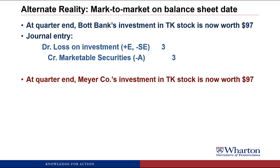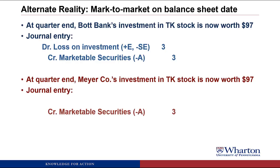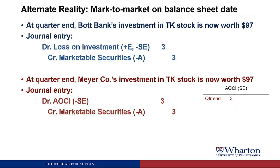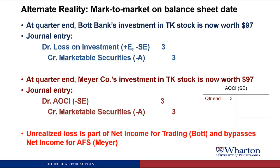Meyer has the same investment — it also drops to 97. They also credit marketable securities to mark the balance sheet to market value, going from 100 down to 97. But under AFS, their unrealized loss goes into AOCI. We debit the AOCI account, which stores up the loss until we need it when we sell the security. AOCI and retained earnings can have balances on the debit or credit side. In this case it's really accumulated other comprehensive loss. Bottom line: this loss of three bypasses net income for AFS, whereas it's recognized on the income statement for BOT.